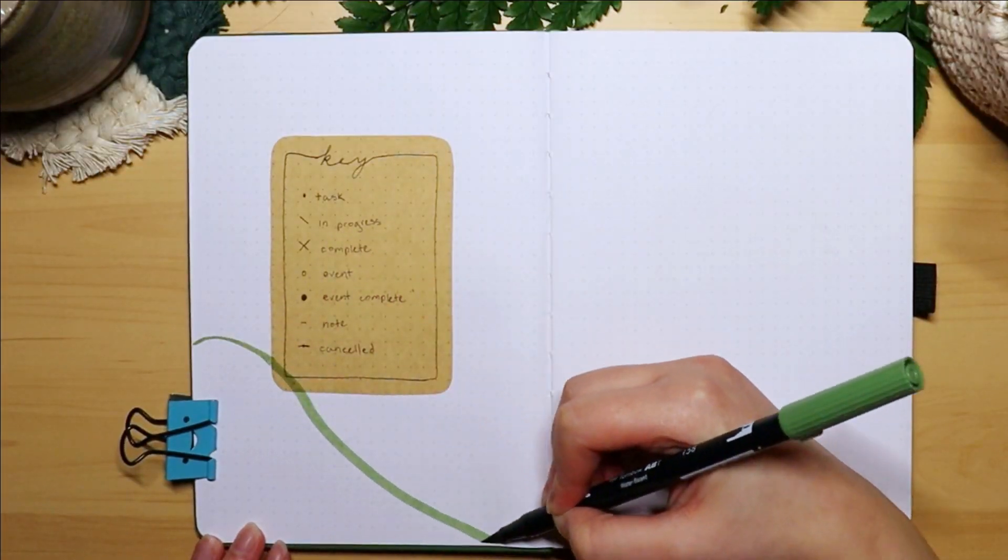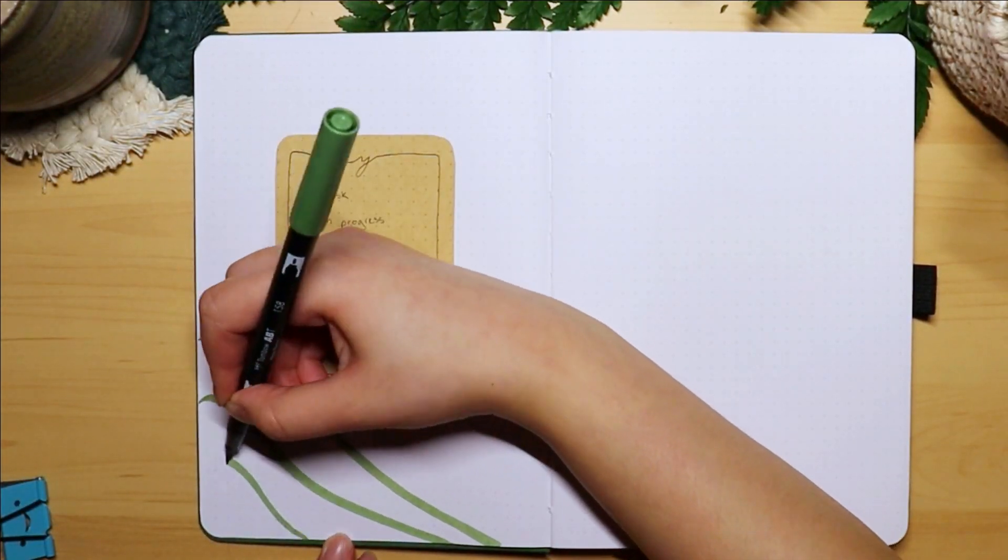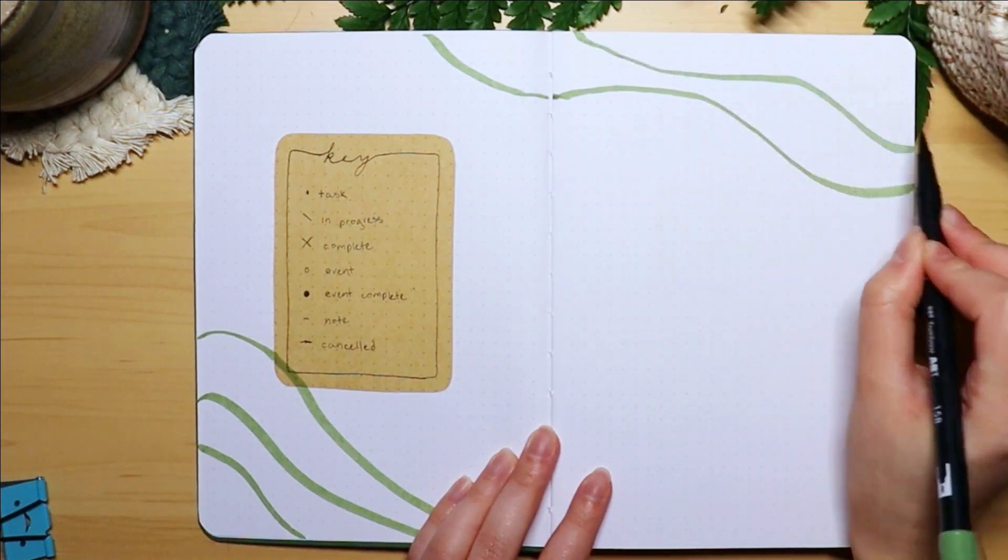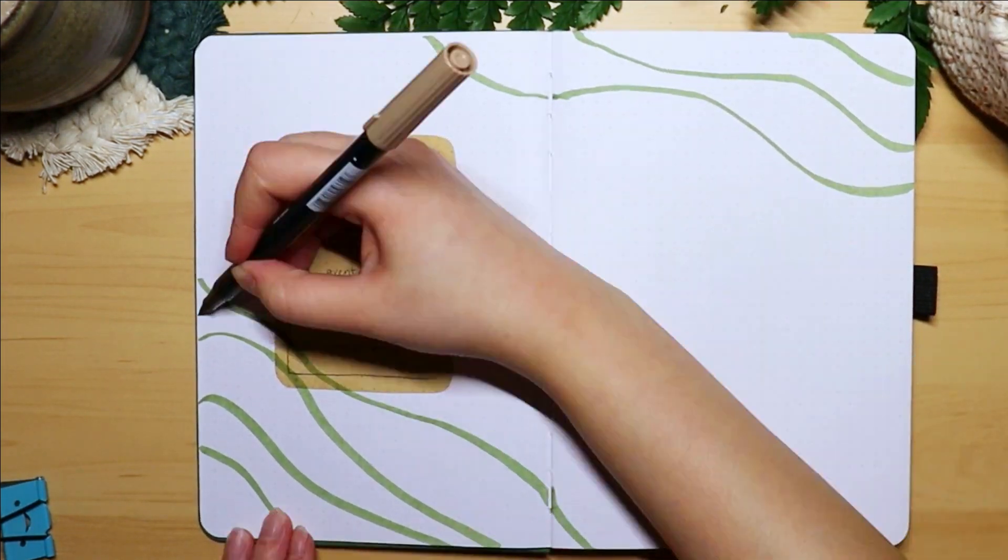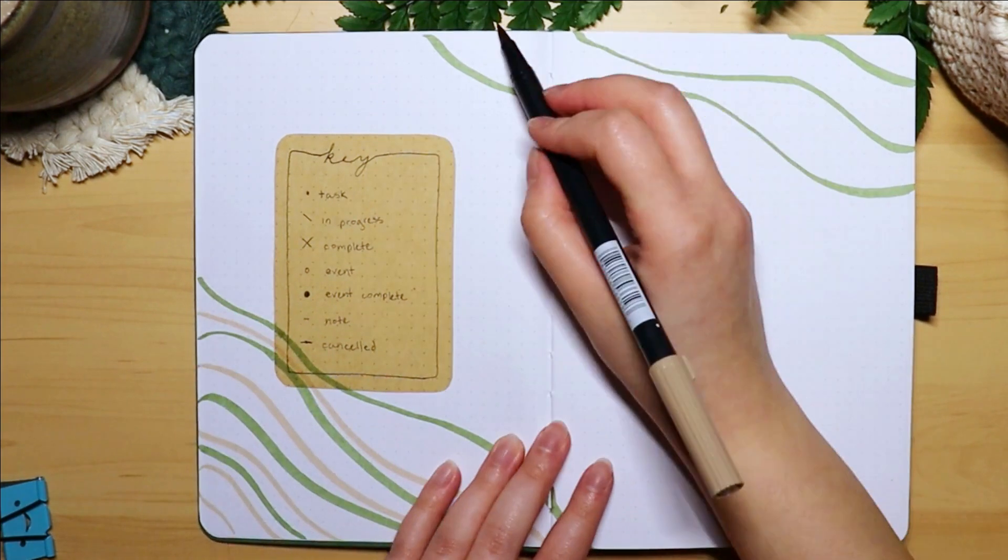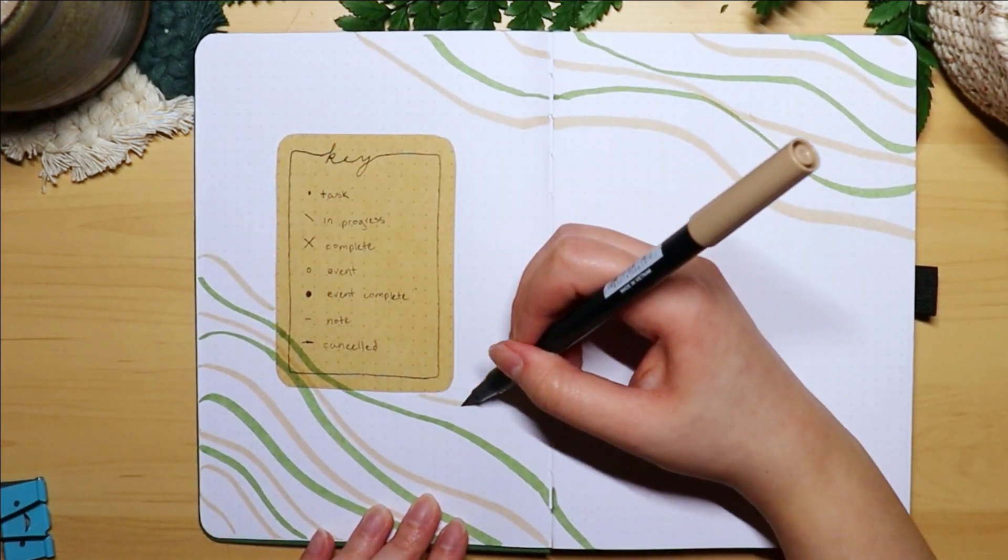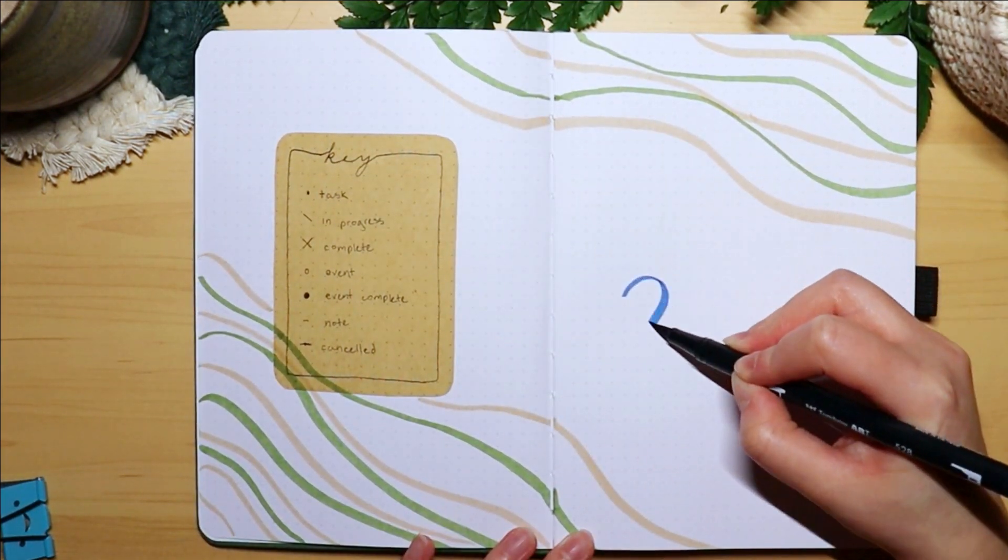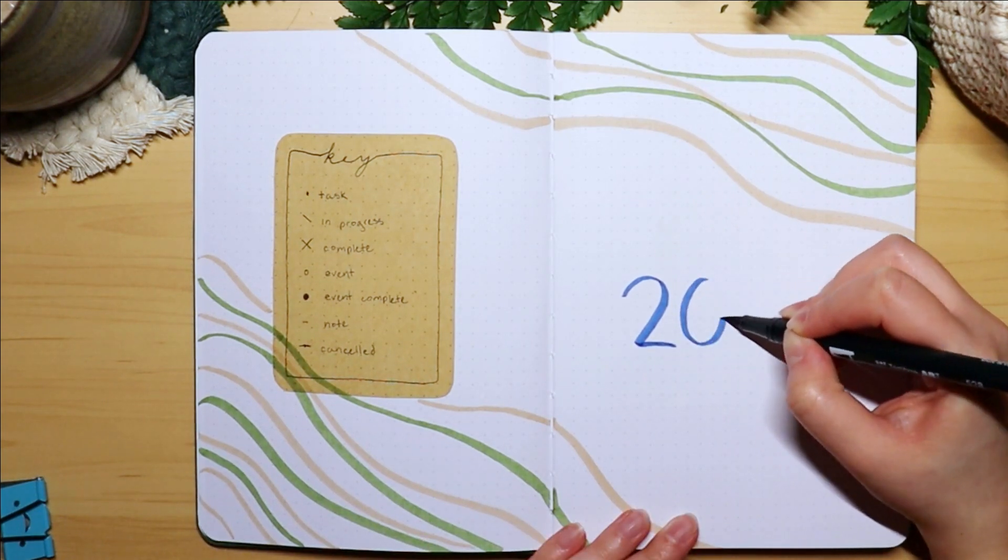My main theme throughout this setup are green and tan wavy lines and using blue as an accent color. I did this to add some color to my pages in a very simple way that ties everything together. On the right hand side I will be writing out the new year 2023.